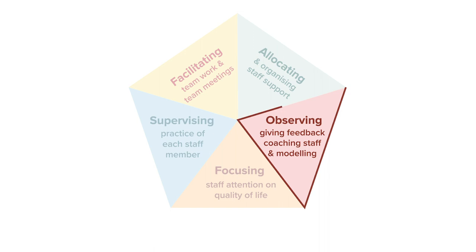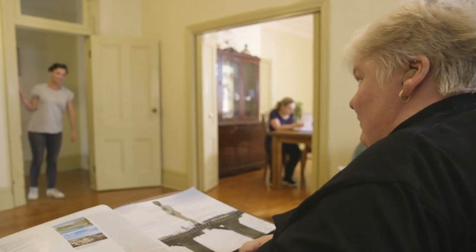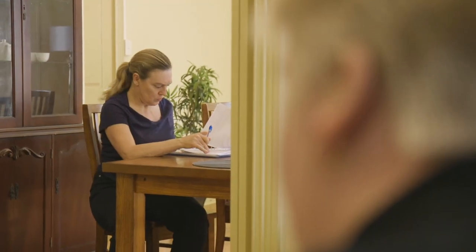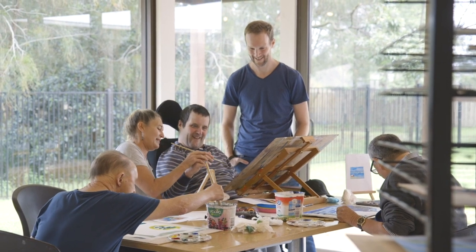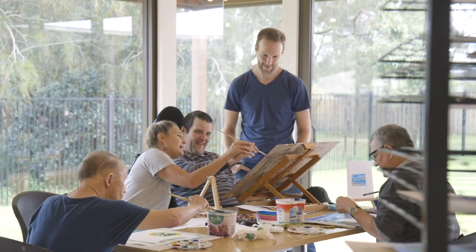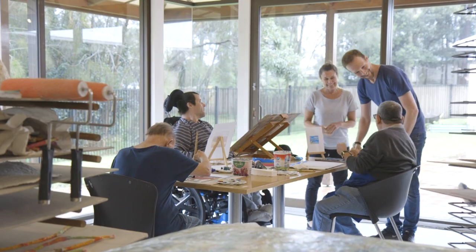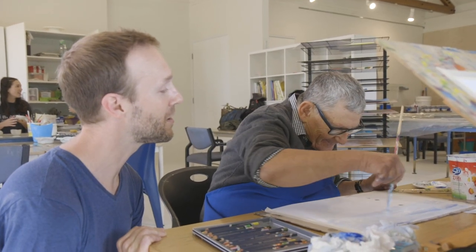The third task of practice leadership involves observing staff providing support. Observation is the best way of finding out how well staff are performing. Frontline supervisors need to regularly observe staff and provide them with feedback, with the aim of helping staff improve their practice. Frontline supervisors also need to model good practice and provide coaching so staff learn how to provide better support.